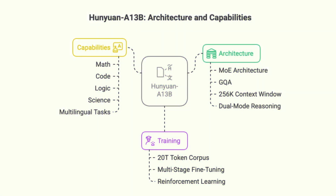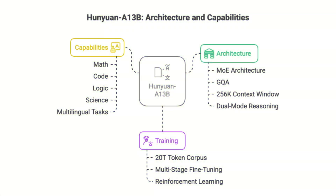Tencent has released Hanyuan A13B, an open-source large language model that uses a mixture of experts (MoE) architecture with 13 billion active parameters out of a total 80 billion. It features grouped query attention (GQA), a massive 256,000 context window, and a unique dual-mode reasoning system that supports both fast and slow thinking for different task complexities.